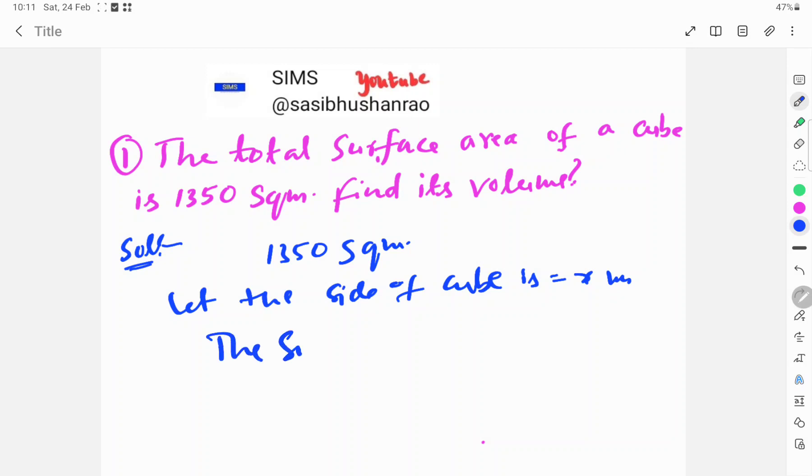So, the surface area of a cube is equal to 6x square, our formula 6x square.